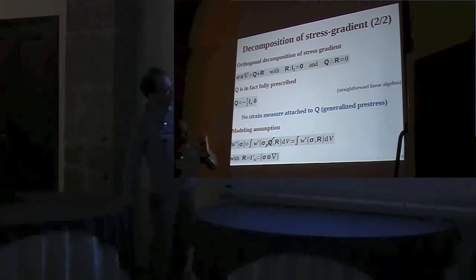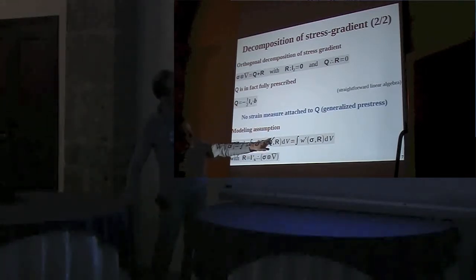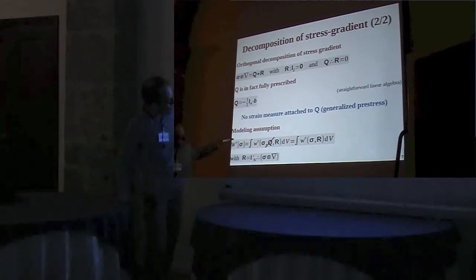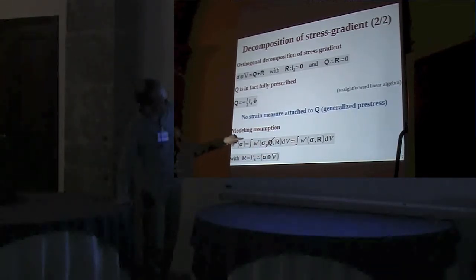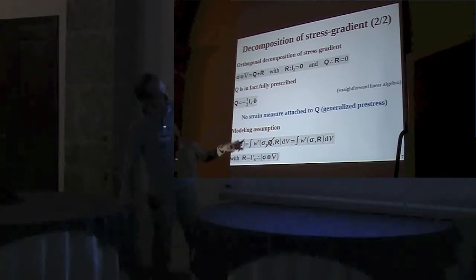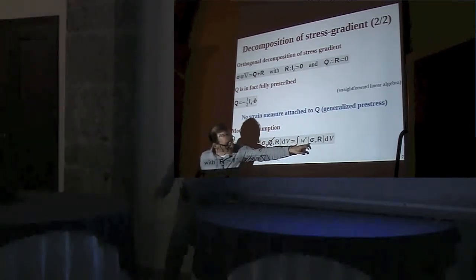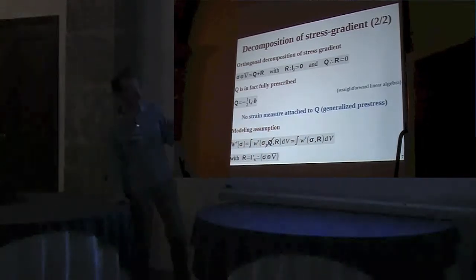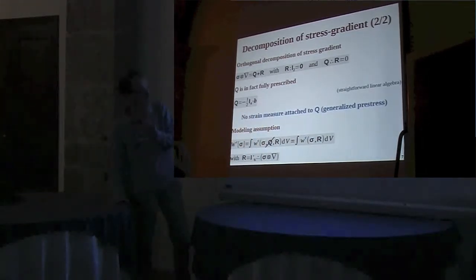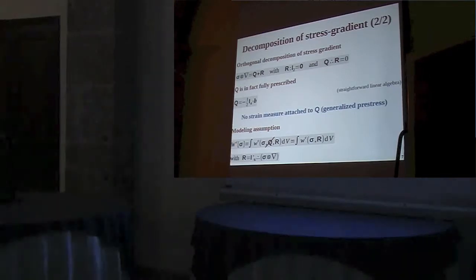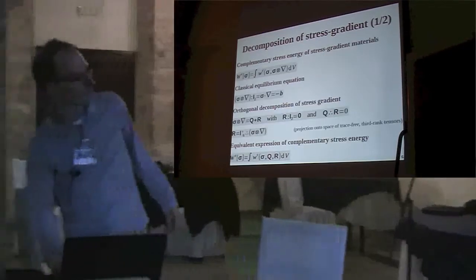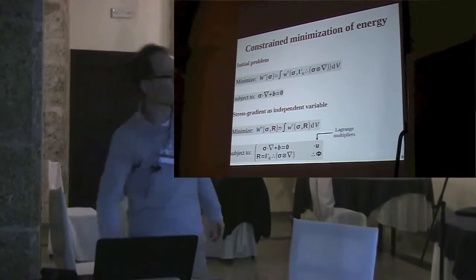From now on, we assume that the stress gradient material is defined by a complementary stress energy which depends on the stress and the trace-free part of its first gradient, R. We now have all the ingredients to carry out the minimization.